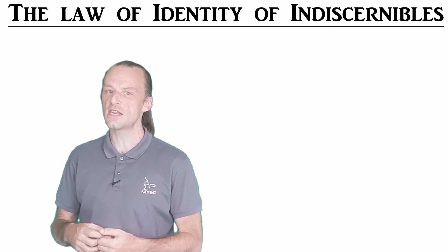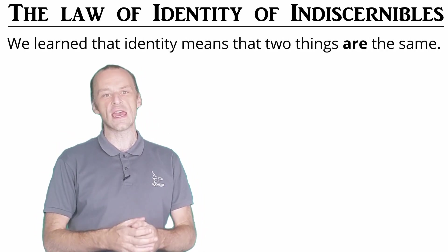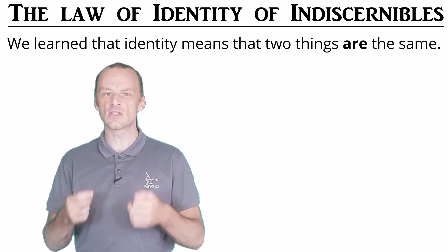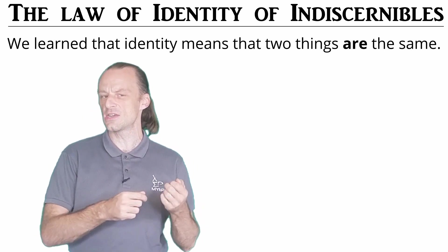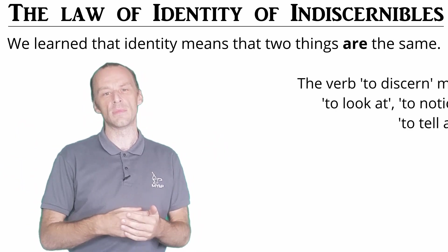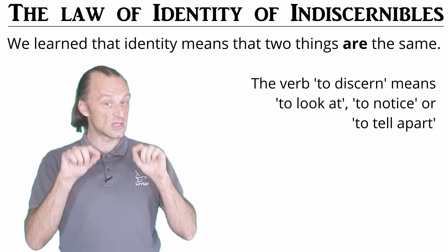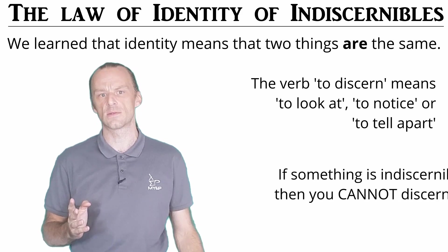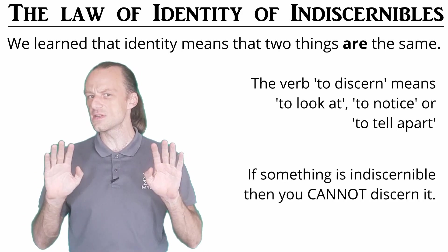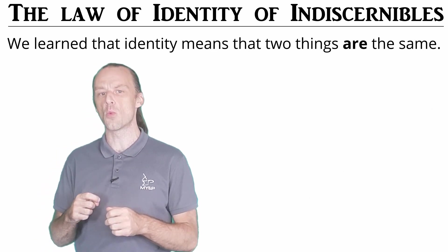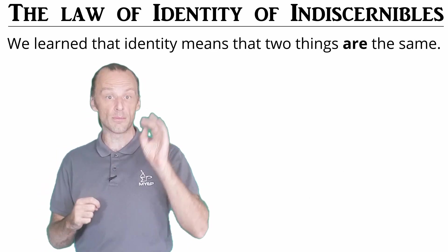Our final law for this video is called the law of identity of indiscernibles. That's quite a scary name, but we've already talked about identity. It means that things are the same. So the law of identity of indiscernibles means that indiscernibles are the same as each other. So what does indiscernible mean? The verb to discern means to look at or notice, or sometimes to tell apart. And indiscernible is something you cannot discern. You cannot tell the difference between things that are indiscernible in some way.